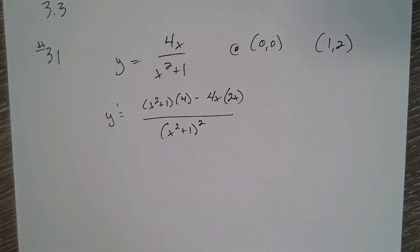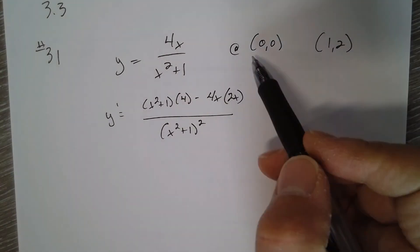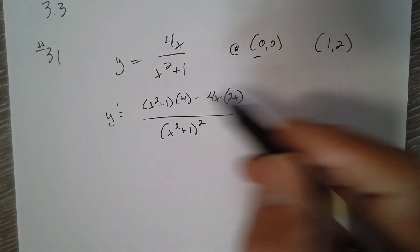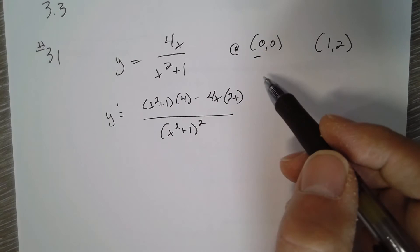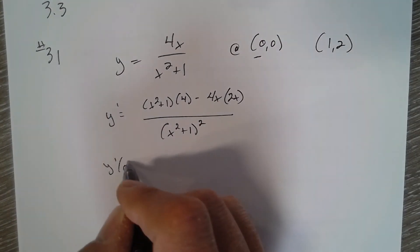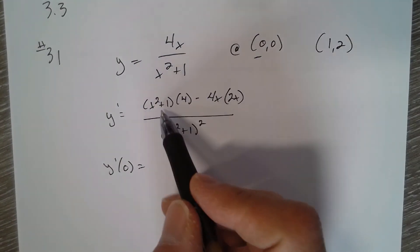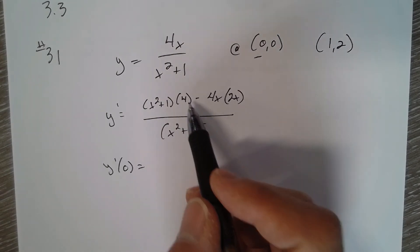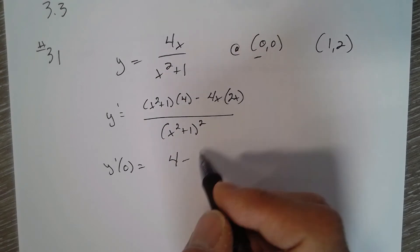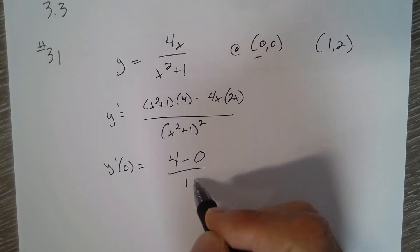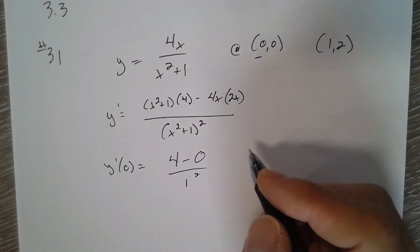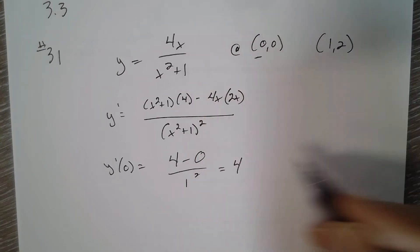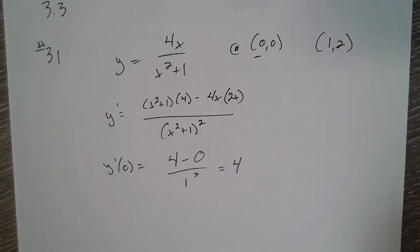I can plug in zero right away and that'll probably clean up a lot of things. So y prime of zero without simplifying it gives you one times four, four minus zero, over one squared, so one. So four over one which is four.